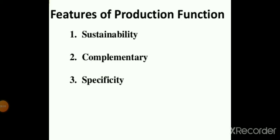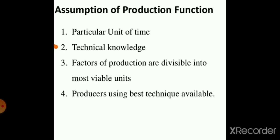Features of the production function are: substitutability, complementarity, and specificity. Assumptions of the production function include: a particular unit of time, given technical knowledge, factors of production are divisible into most viable units, and producers use the best technique available.